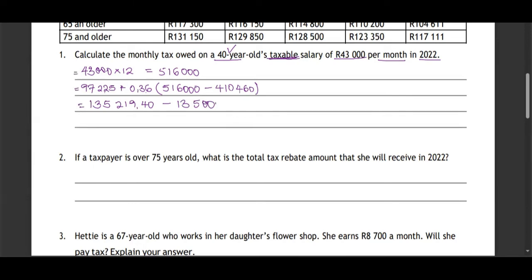Now divide by 12. Why? Because they want us to calculate the monthly tax, yet all the values we were dealing with are annual. So dividing by 12 gives the monthly tax: R10,143.28, which is approximately R10,143. This is the tax he pays per month.